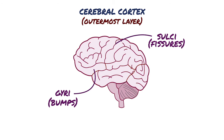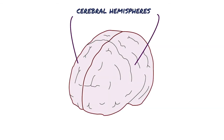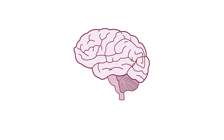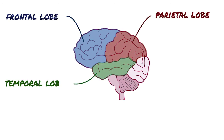The cerebral cortex is divided lengthways into two cerebral hemispheres. Traditionally, each of the hemispheres has been divided into four lobes: frontal, parietal, temporal, and occipital.